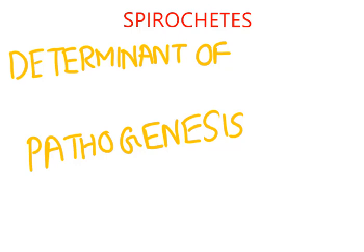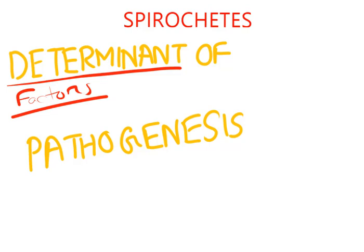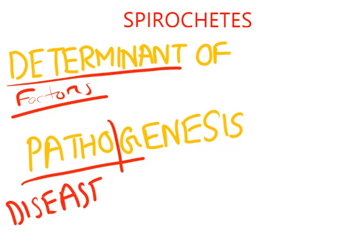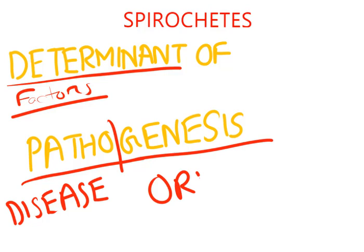First, determinants of pathogenesis. What does it mean? Determinants means factors. Pathos means disease and genesis means origin. So, this fancy term basically means factors that help Tryponema pallidum to produce disease. So, what are those factors?